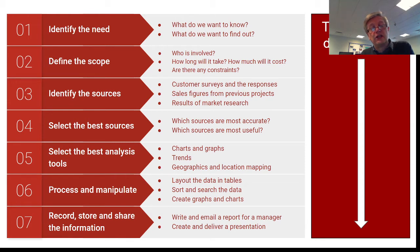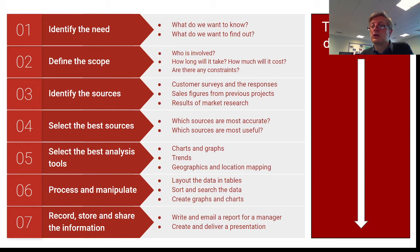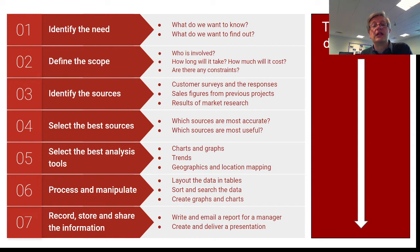The final two stages — which are grouped together in step seven — are to store this data somewhere and record it in a format that makes sense. Then we share it. We might write a report including charts, graphs, trends, and location mapping. We might email or post it to the person who needs to see it. We might create a presentation and deliver it to stakeholders, the NHS, or the government, saying: we asked the relevant people, identified the sources, analyzed the data, and we think this is a project worth doing — here's how it might look, how much it might cost, and how long it will take.